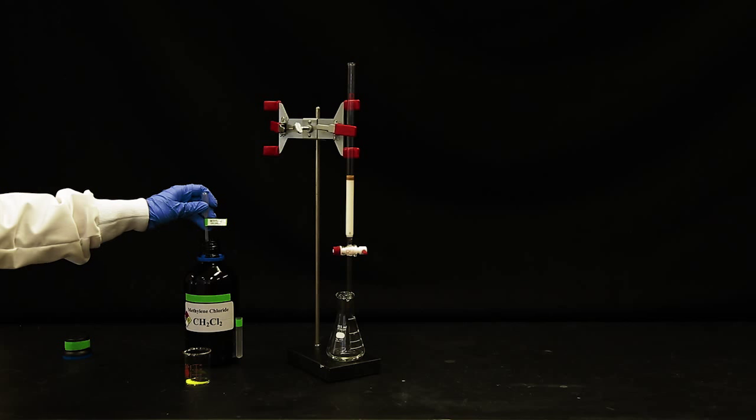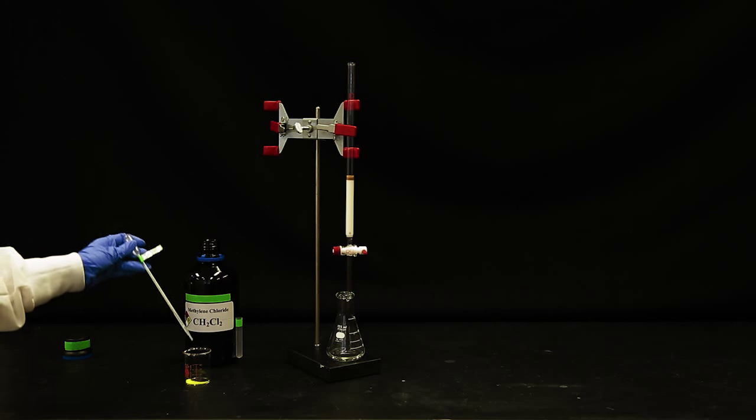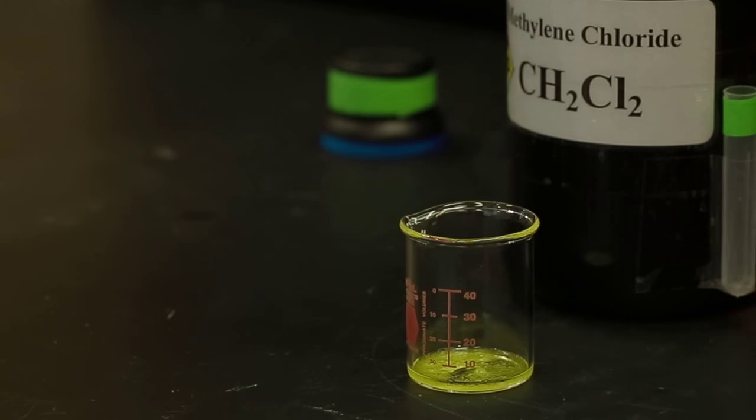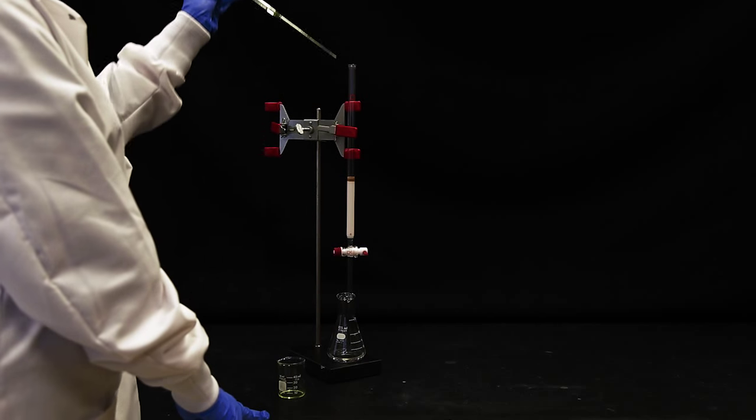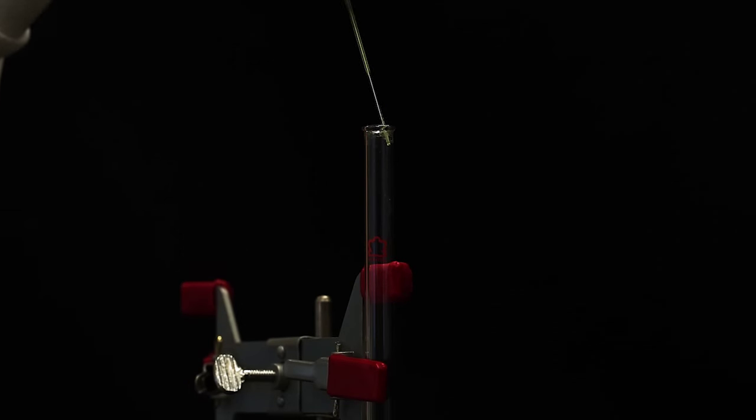Dissolve the crude product in a small amount of dichloromethane. Add this to the top of the column by carefully pipetting the solution around the edges of the column, allowing it to run down the sides.